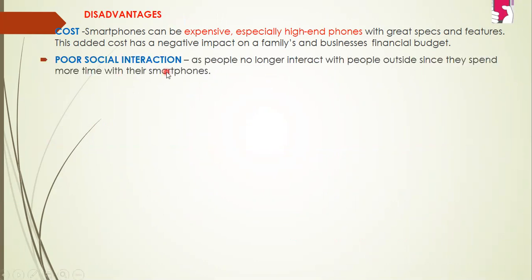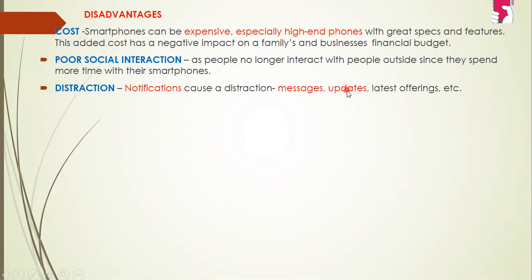There's poor social interaction. Smartphones cause poor social interaction as people no longer interact with people outside since they spend more time with their smartphones — they make friends on smartphones and there is no physical or face-to-face interaction. Distraction: notifications can cause a distraction. Notifications are messages, updates, latest offerings, and so on, and in a workplace this can be very distracting and time can be wasted.